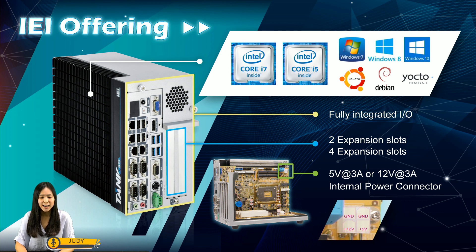It is enriched with high-speed I/O interfaces such as multiple COM ports, USB 3.0, LAN ports, and more. Most importantly, Tank has expansion slots — two or four expansion slots to choose from. It allows customers to easily integrate different kinds of accelerator cards needed. Tank also provides a convenient 4-pin internal power connector for add-on card usage, adding more flexibility to the embedded system in industrial environments.